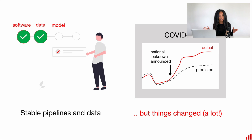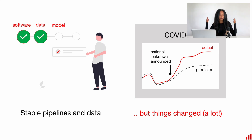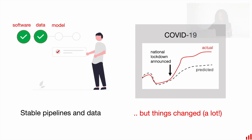But just imagine if your pipelines are stable, yet there are some changes in the environment. In this case, you might see some data drift or concept drift. This is why we also need to monitor for model quality and model relevance.